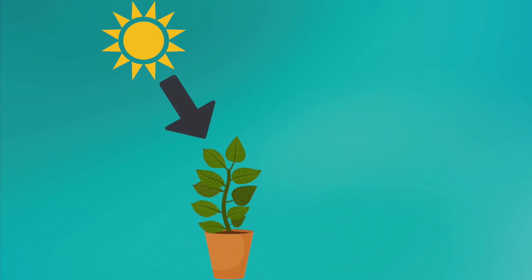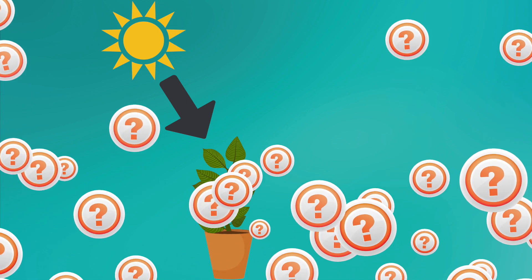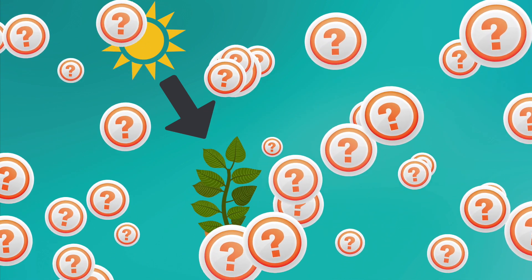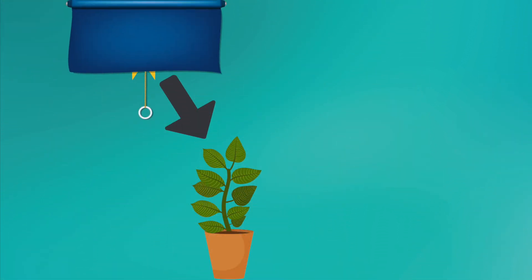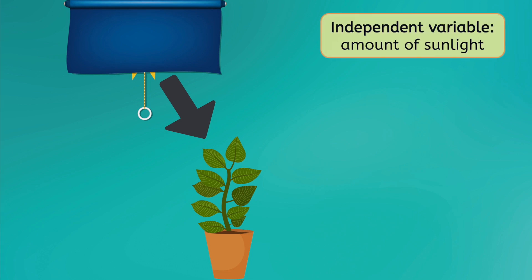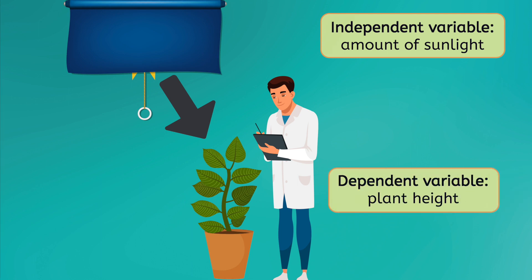Let's try another example. If we were testing how sunlight affects plant height, what would our independent and dependent variables be? Pause the video and write down what you think in your guided notes. We can easily manipulate or change the amount of sunlight, making it our independent variable. We observe and measure plant height, making that our dependent variable.